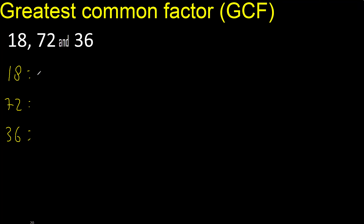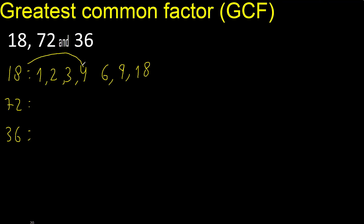Factors first — always start with 1. Divided by 1 is 18. Next, divided by 2. Next, divided by 3. Next, cannot be divided by 4 or 5. Next, 6 — 6 is here.